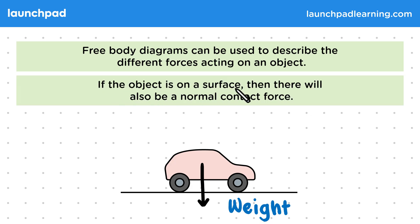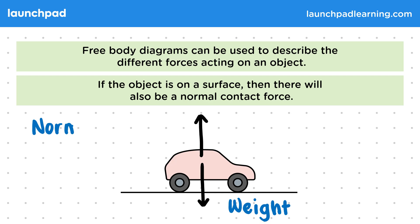If the object is on a surface, then there will also be a normal contact force. The normal contact force stops an object moving through the surface, and acts at right angles to the surface. So on the free body diagram, the normal contact force is directed upwards, away from the surface, and the contact force is equal in magnitude to the total downward force.